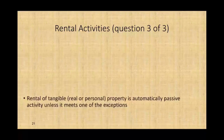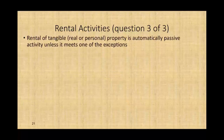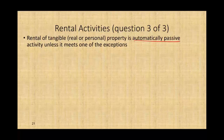Once we meet the material participation standard, it is an active business and we can deduct losses against active income. The third question we need to address is rental activities. Rental activities are automatically passive — because the rules were designed to curb rental activity abuse — unless they meet one of the exceptions.